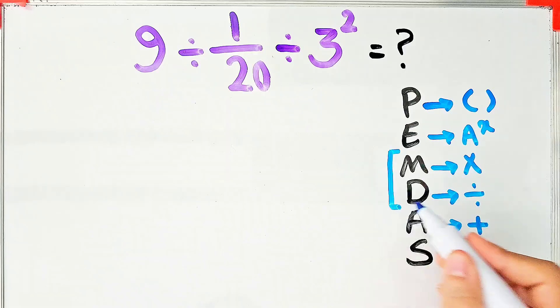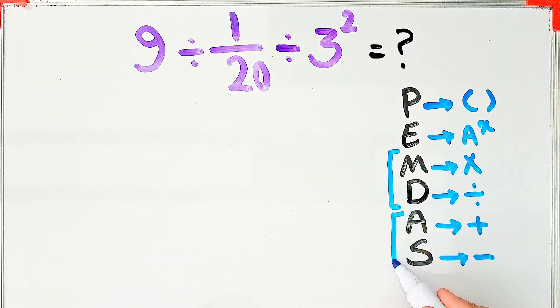Multiplication and division have the same level of priority. Also, addition and subtraction have the same priority. When we have both in an expression, we start from the left and simplify the question.